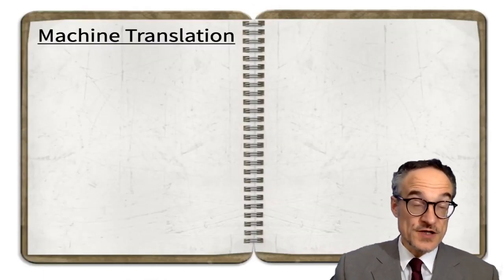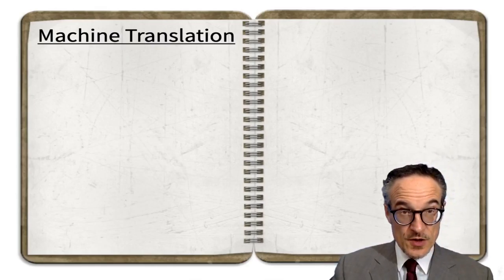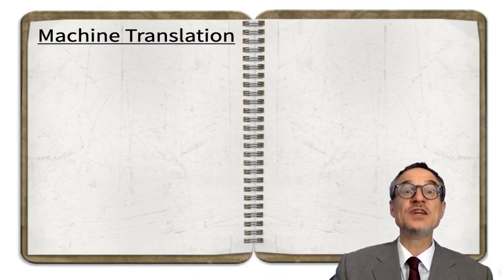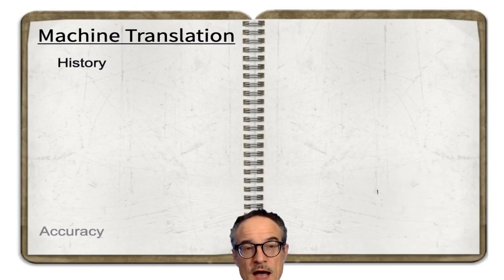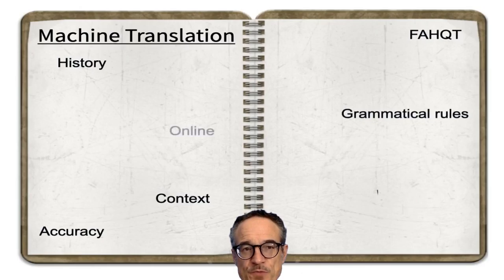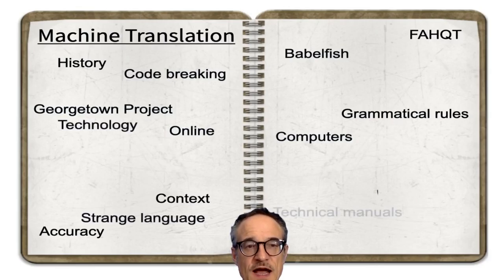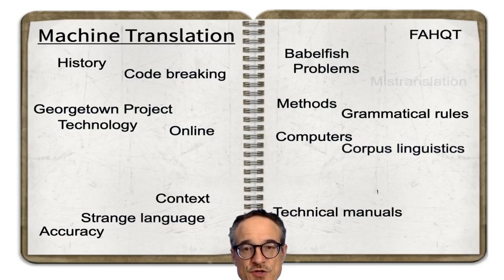This is another example — a piece of writing, not a story. I wrote something about machine translation. You can read it later. When I was writing it, I came up with lots of different ideas: history, accuracy, grammatical rules, code breaking, computers, strange language, technology, technical manuals, methods, corpus linguistics, mistranslation.